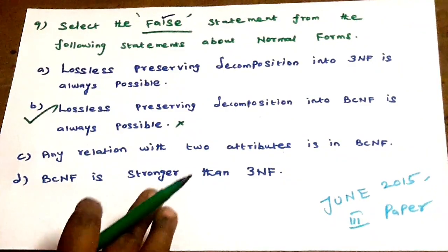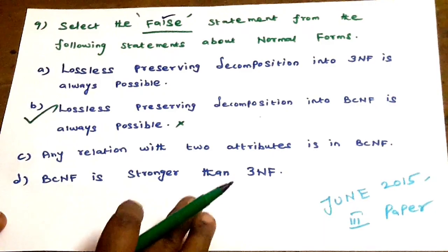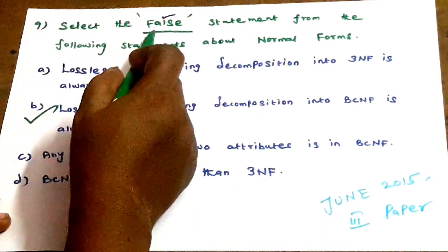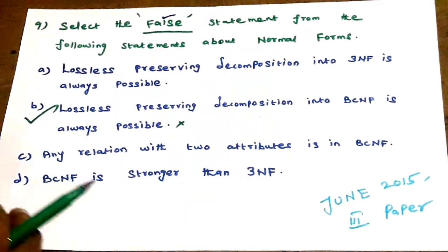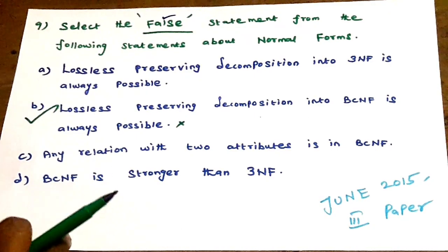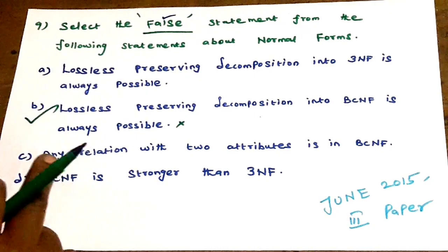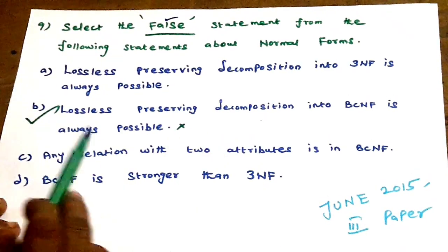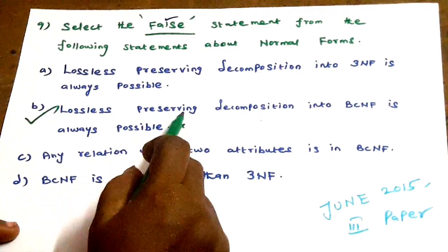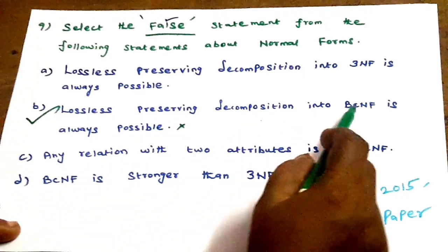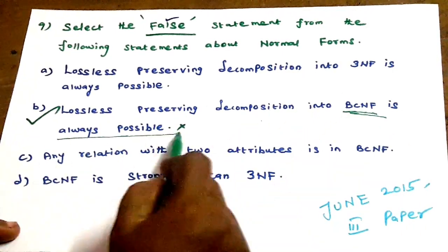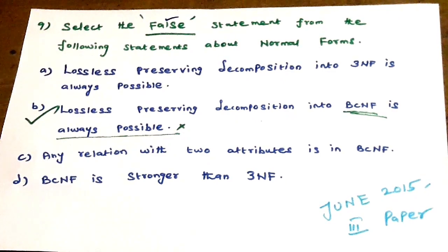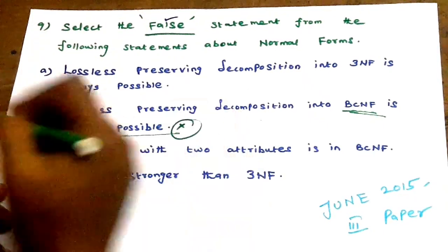Next question, June 2015: select the false statement. Four options related to normal forms. The false statement is option B: 'Lossless preserving decomposition into BCNF is always possible.' BCNF decomposition always being possible is the false statement.